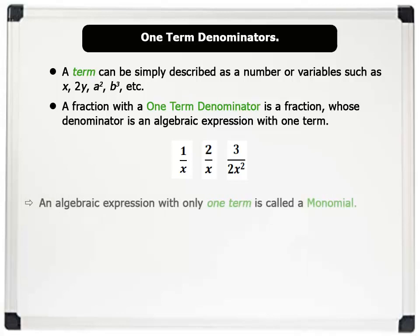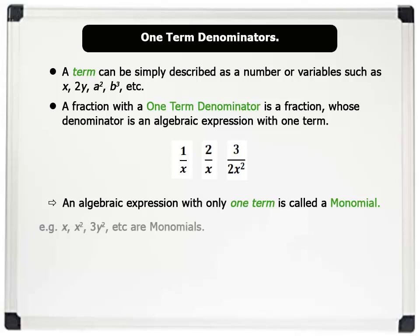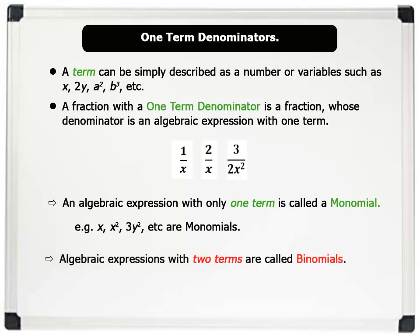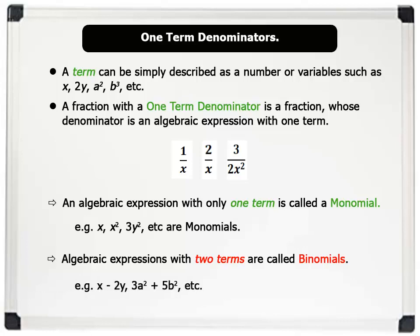Note: An algebraic expression with only one term is called a monomial. For example, x, x squared, 3y squared are all monomials. Also, algebraic expressions with two terms are called binomials. Examples include x minus 2y, 3 squared plus 5b squared, etc.